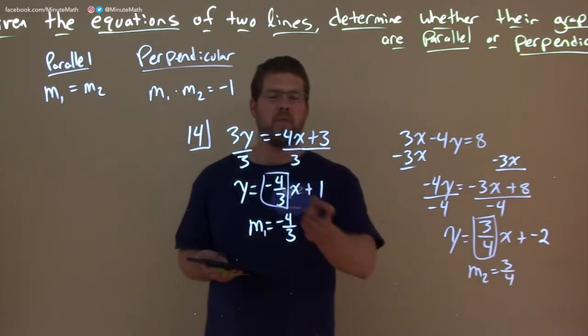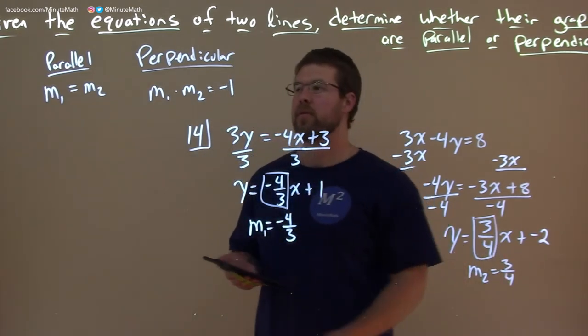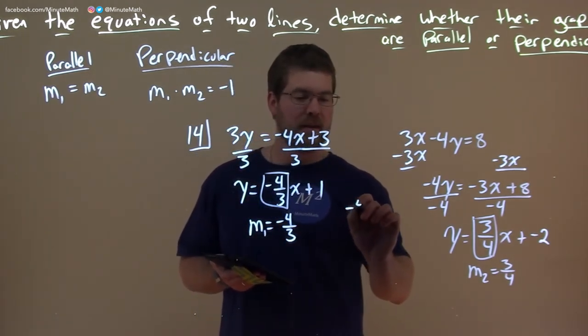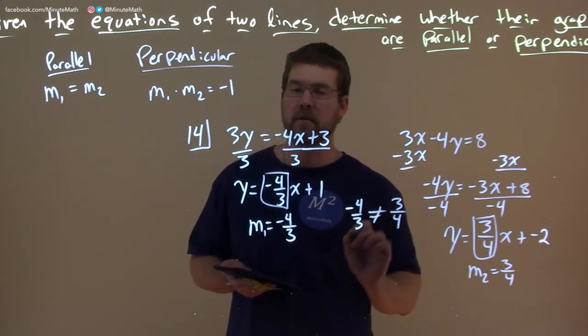Well, right now they're not the same. They almost look the same. We have negative 4 thirds and 3 fourths, but they're not equal to each other. So they're not parallel. So we can state that negative 4 thirds is not equal to 3 fourths. Good to know.